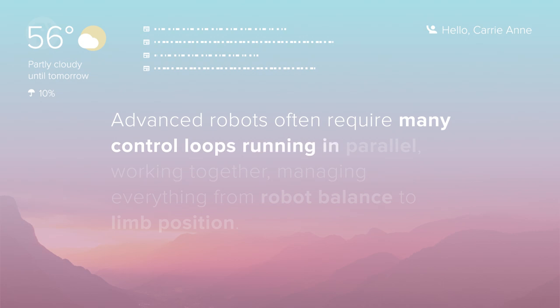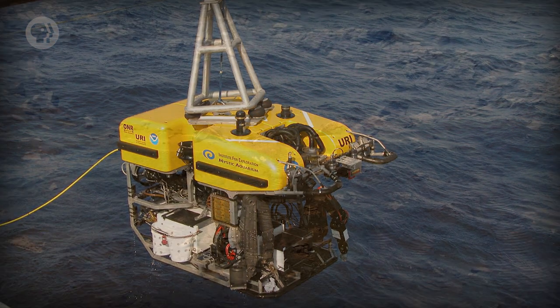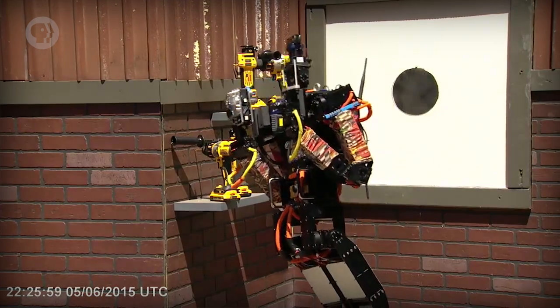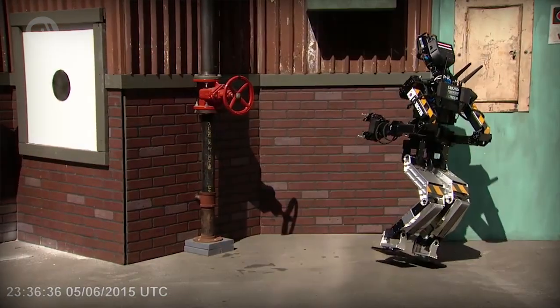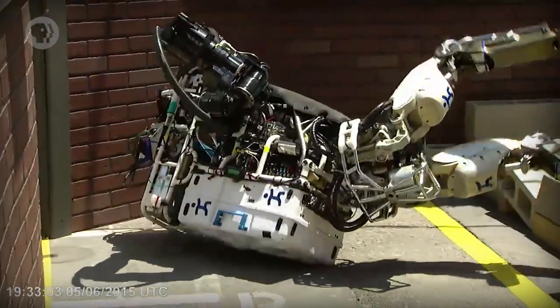Advanced robots often require many control loops running in parallel, working together, managing everything from robot balance to limb position. Control loops are responsible for getting robot attributes like location to desired values, and higher-level robot software plans and executes robot actions, like plotting a path around sensed obstacles, or breaking down physical tasks like picking up a ball into simple sequential motions. Using these techniques, robots have racked up some impressive achievements – they've been to the deepest depths of the Earth's oceans and roved around on Mars for over a decade. But lots of problems that are trivial for humans have turned out to be devilishly difficult for robots, like walking on two legs, opening a door, picking up objects without crushing them, putting on a t-shirt, or petting a dog.